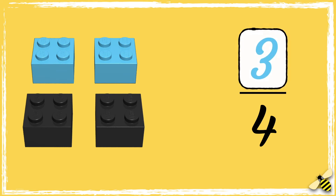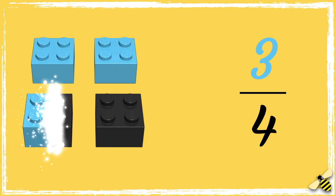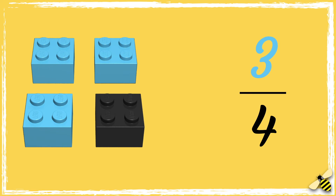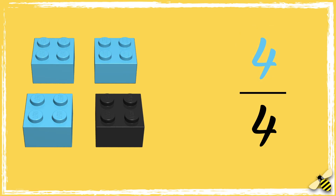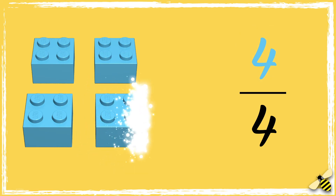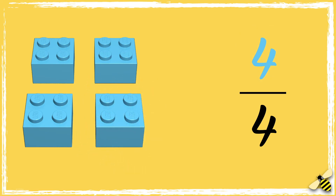Let's try changing it again. If I change the numerator to three, how many blue bricks should I have? I should have three bricks out of four that are blue. What do you think would happen if we change the numerator to four? This means that out of four bricks, all four of them should be blue.